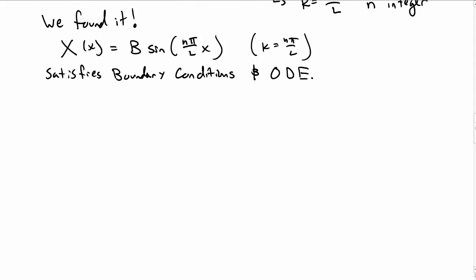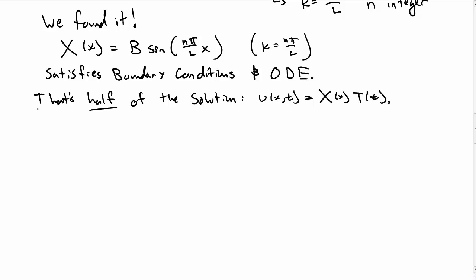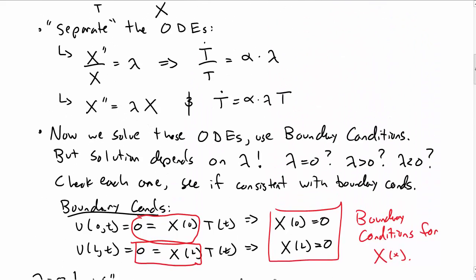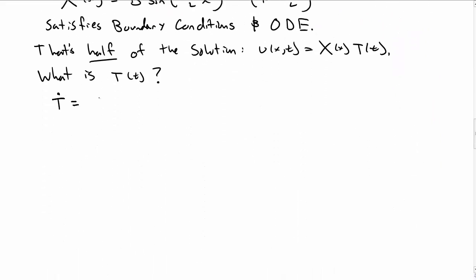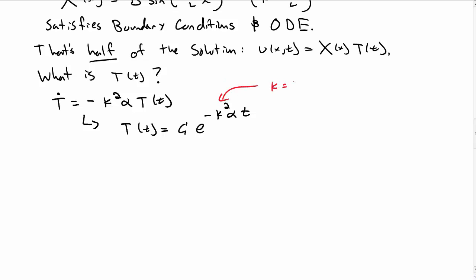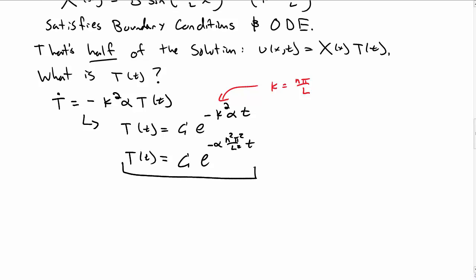We now have half the solution. We still need T(t). The ODE for T is T-dot = alpha lambda T, and we now know lambda = -k squared with k = nπ/L. So T-dot = -k² alpha T. This is a first-order ODE with solution T(t) = c e^(-k² alpha t), or explicitly, c e^(-alpha n² π²/L² · t).